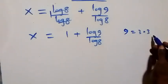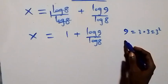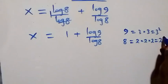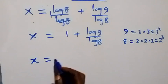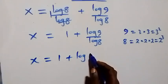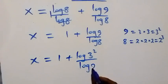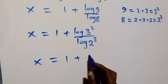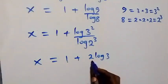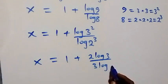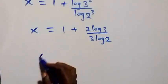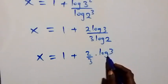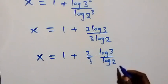Writing 9 as 3 squared and 8 as 2 cubed, we get x equals 1 plus log 3 squared over log 2 cubed. Applying the power law, this becomes x equals 1 plus 2 log 3 over 3 log 2. We can separate this as x equals 1 plus (2 over 3) times (log 3 over log 2).